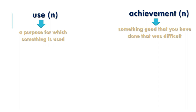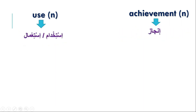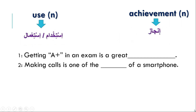Let's look at the final two words. Use — this is a noun, meaning a purpose for which something is used. And we have achievement — this is also a noun, meaning something good that you have done that was difficult; an accomplishment. Now let's look at these two sentences and identify the context clues and key words that help us choose the correct word.